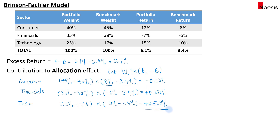If we sum these up, the total allocation effect is positive 0.55%. This is how much the allocation effect contributes to the overall excess return.